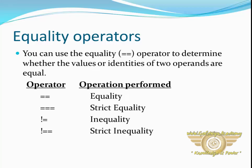Equality operators: you can use equality operators to determine whether the value or identity of two operands are equal or not. Equality operators are: double equal to (==), triple equal to (===) which means strict equality — the value and the type of both operands must be the same for it to return true. Not equal to (!=), and not double equal to (!==), which is strict inequality.